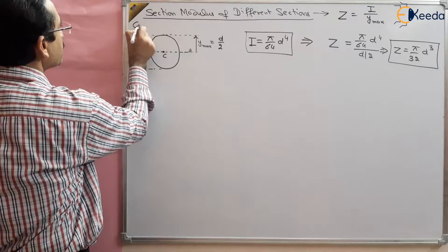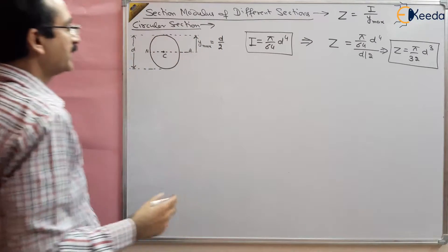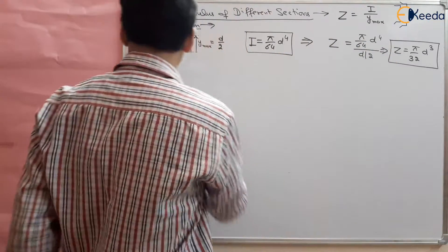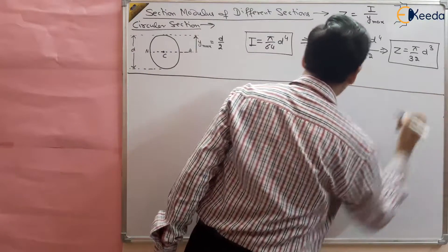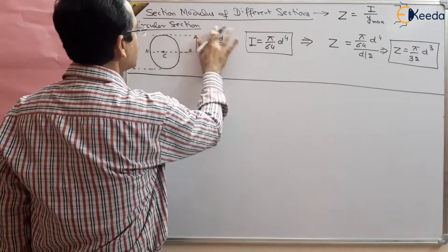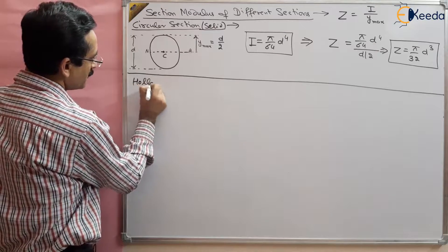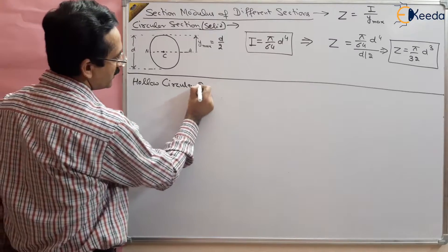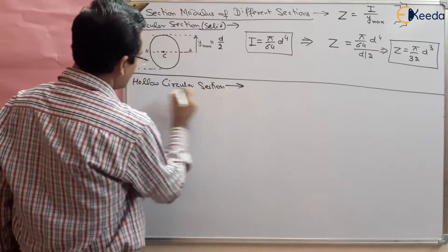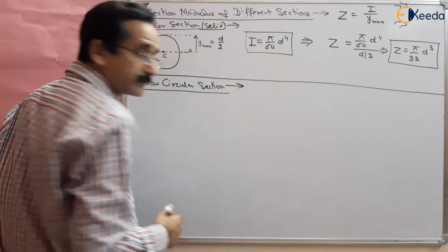We have taken the solid circular section and found Z = π/32 × d³. Now we can move to the hollow circular section. We want to find out the section modulus of a hollow circular section.